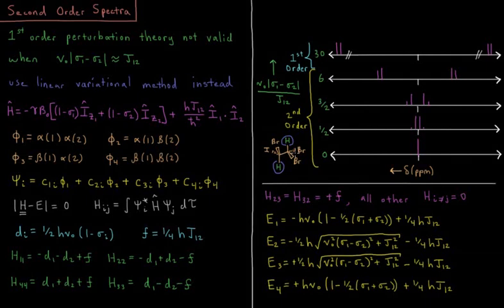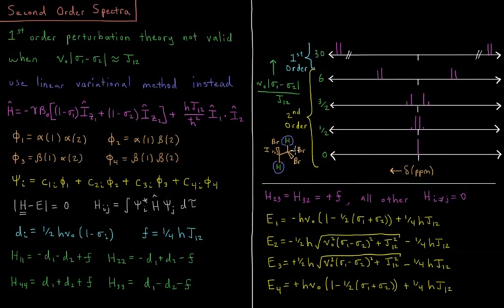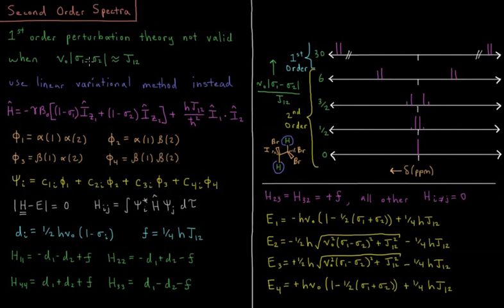This can be shown with an example like 1,1,2-tribromo-2-iodoethane, where we have two different protons. They're not chemically equivalent, so they will couple to one another, but the magnetic shielding constant of one proton is probably not that different from the other, because the only difference is replacing bromine with iodine. So you might have a situation where the two peaks aren't very far apart relative to their coupling constant.